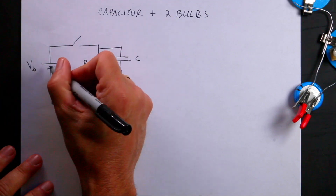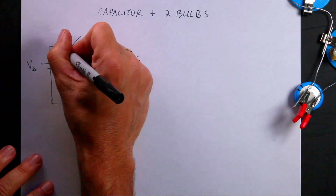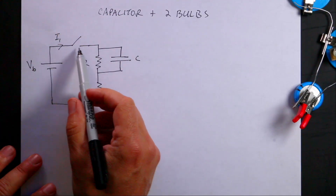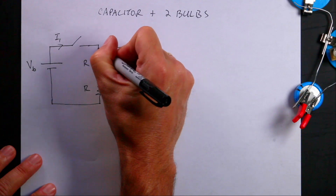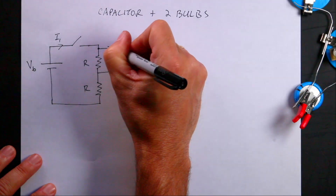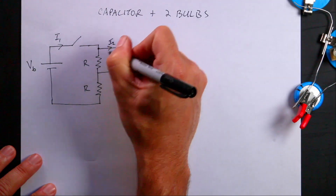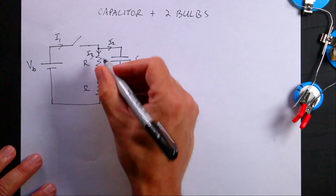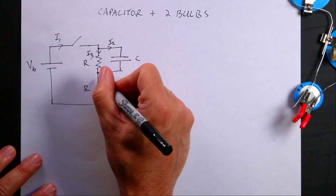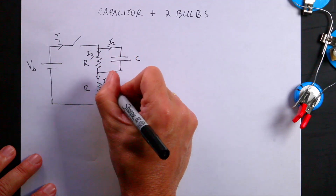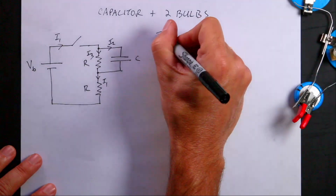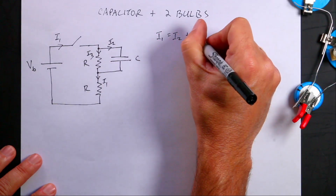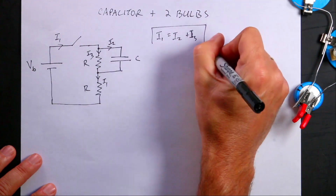Let's start with the current first. If this is my battery and that's the positive side, I have a current coming out — I'll call that I1. Once the switch is closed, it comes to a junction where some current goes one way, I'll call that I2, and some goes the other way, I3. They combine back together as I1. So I1 equals I2 plus I3 — that's my junction rule.